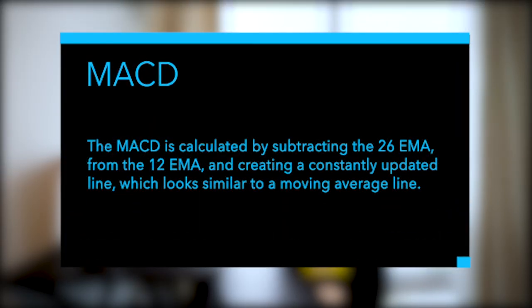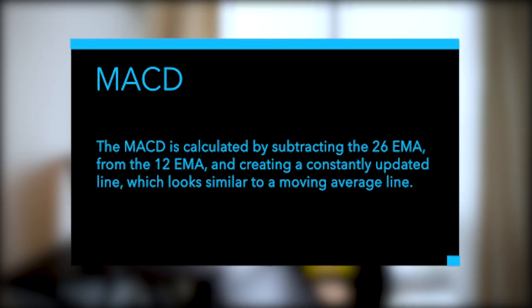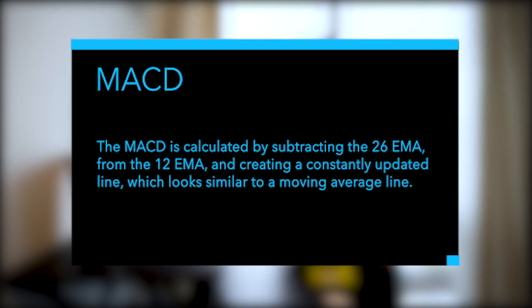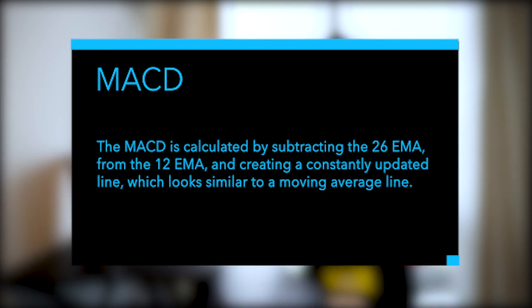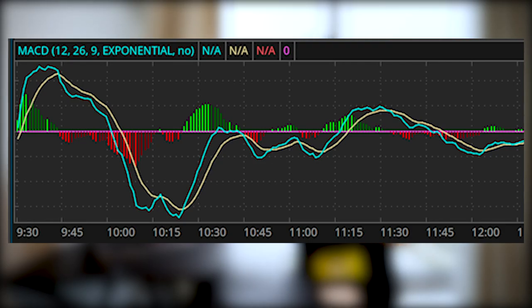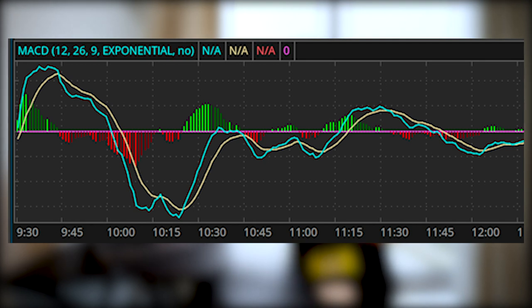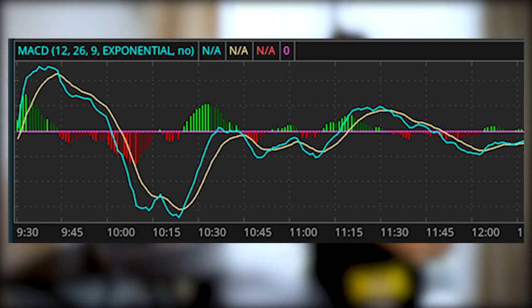The MACD is calculated by subtracting the 26 EMA from the 12 EMA, creating a constantly updated line which looks similar to a moving average. A 9-day EMA of the MACD line is then added as well, which is meant to be used to show buy or sell signals.